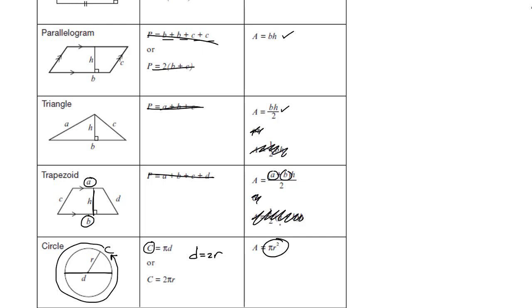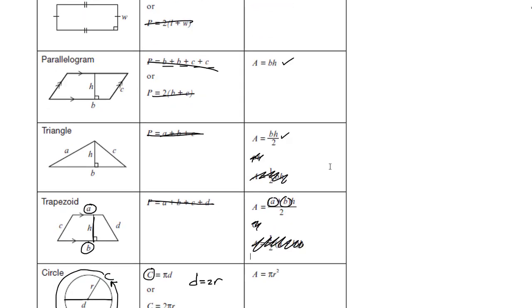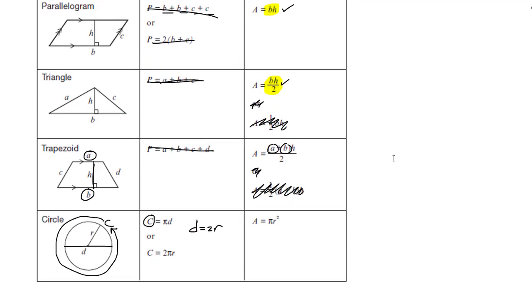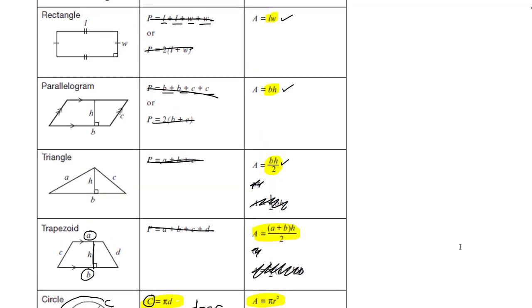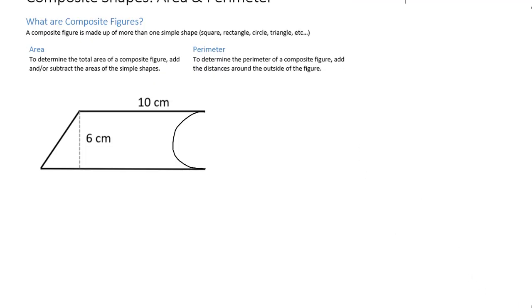The key formulas to know are: length times width for a rectangle, base times height for a parallelogram, and base times height divided by two for a triangle. The other perimeter cases are so easy you should be able to do them without a formula. Those are the ones we really need off the front of this page.